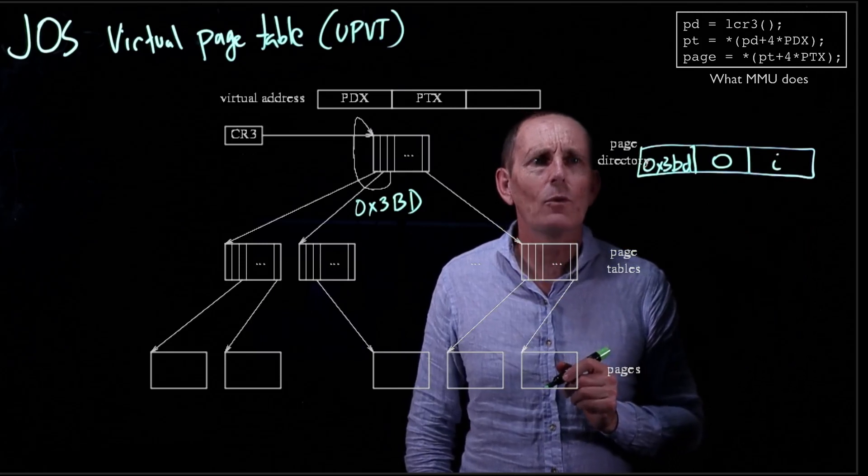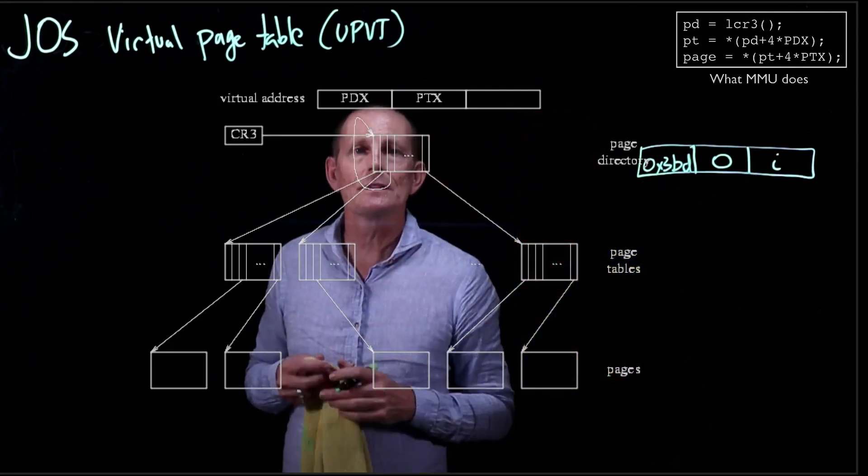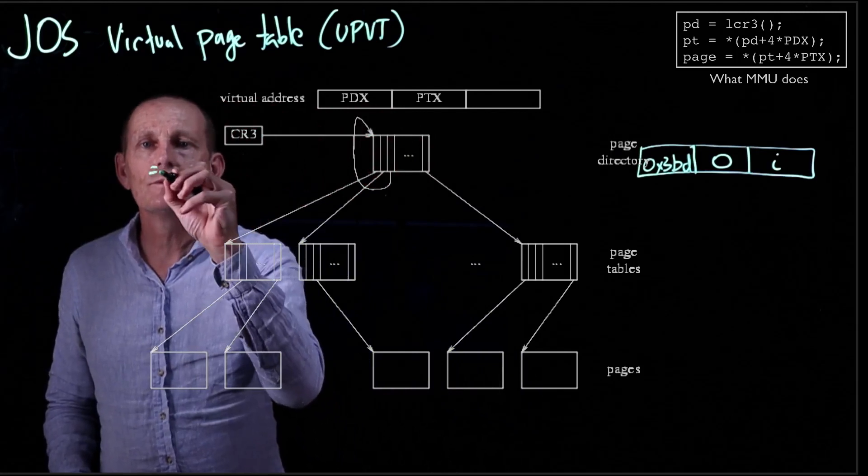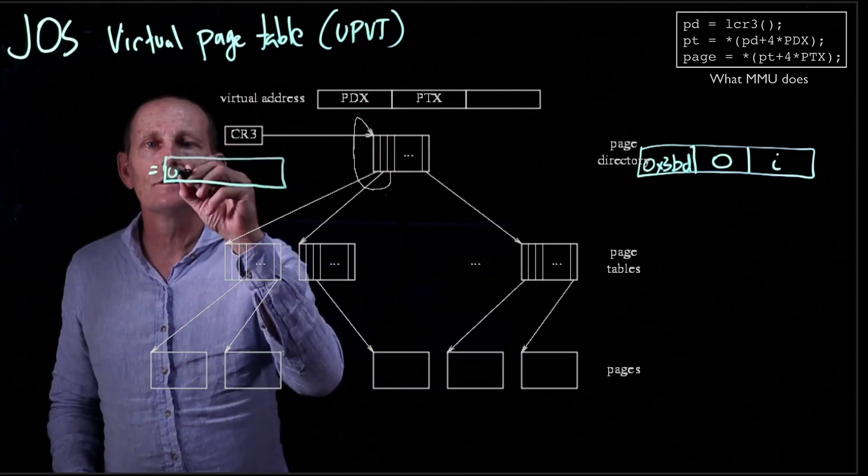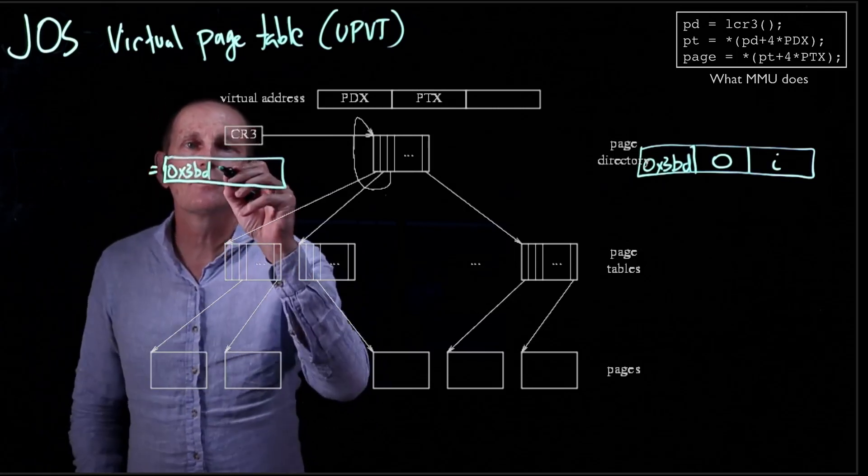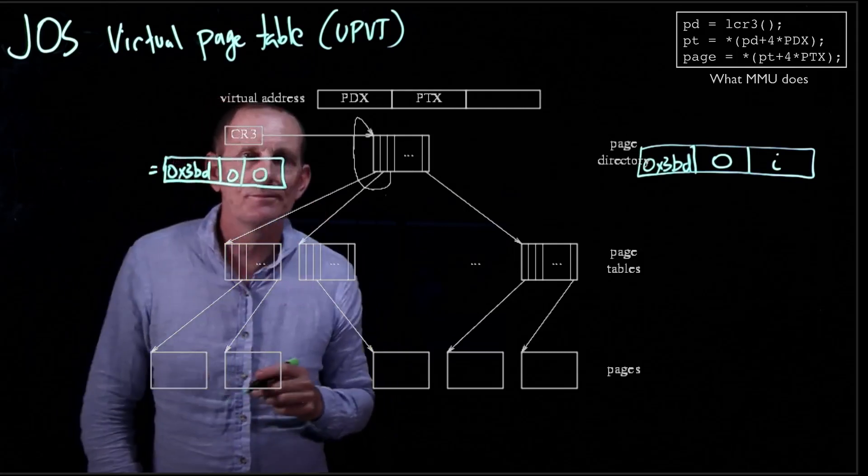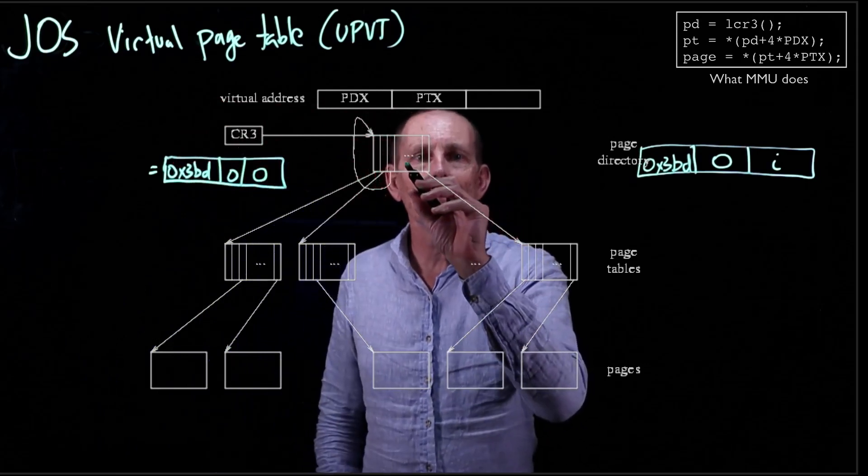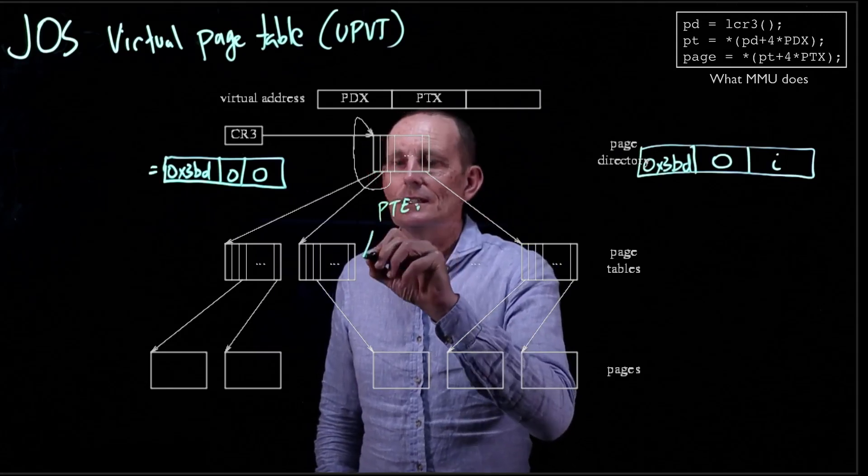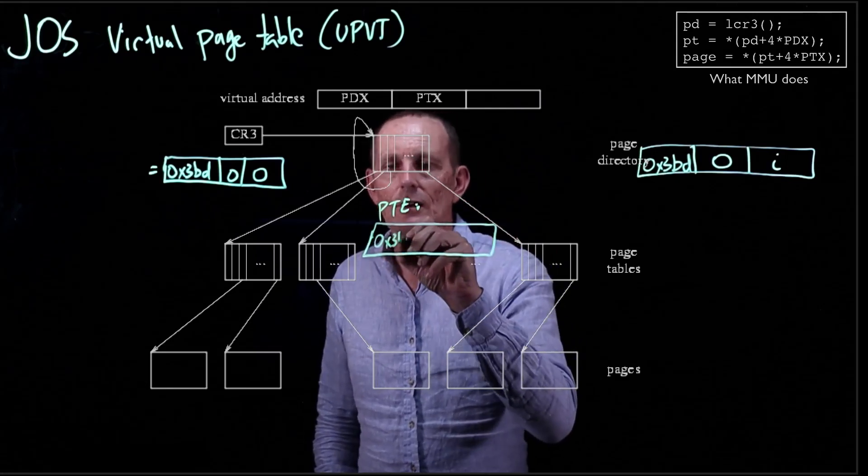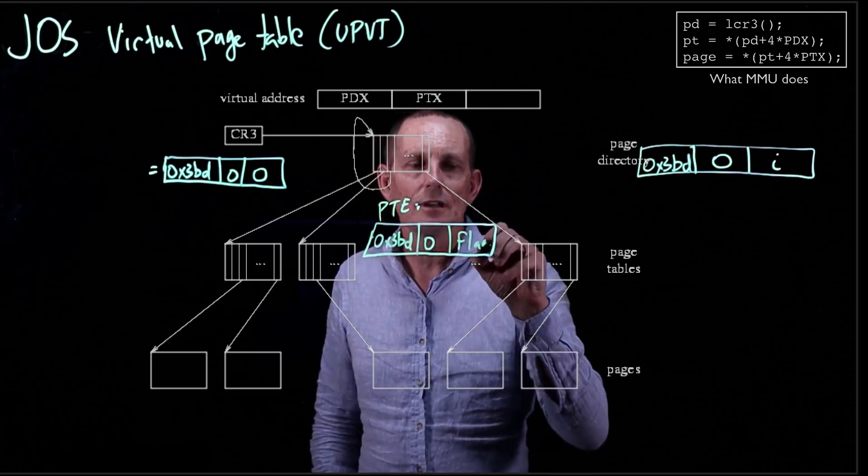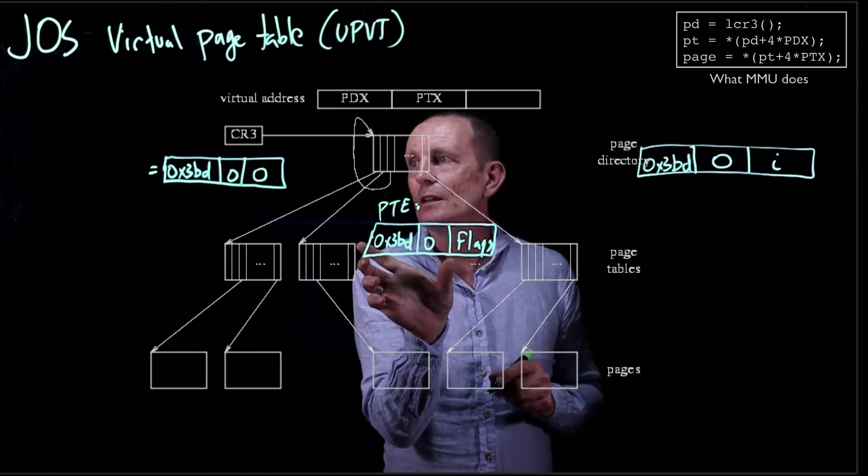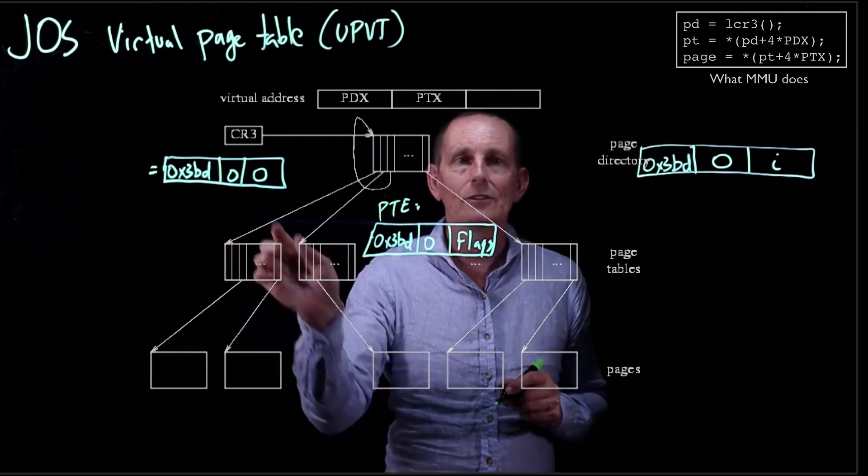So this is going to be 0x3BD, and 0, and i. And let's kind of just look at what would happen if we use this, okay? So let's say we've got this set up like this. And we know that CR3 is the address consisting of the page directory index of 0x3BD, the page table index of 0, and an offset of 0, okay? So that is what the CR3 consists of. The 0x3BD element in here has a page table entry that consists of 0x3BD and some zeros and some flags. 10 bits of 0x3BD, 10 bits of 0, that's the 20-bit page number, which again is the same as this page number. So that's how we're getting this loop back.